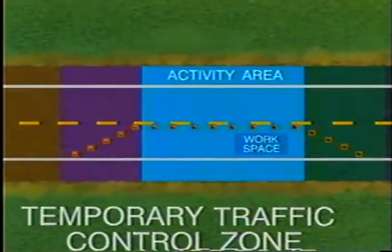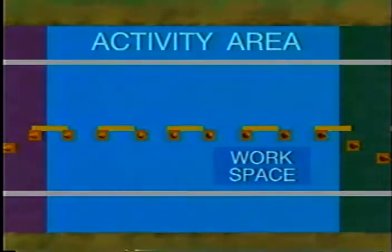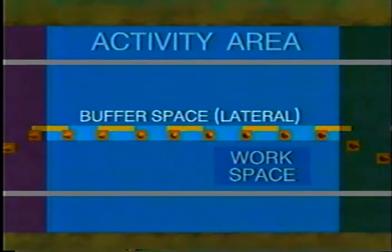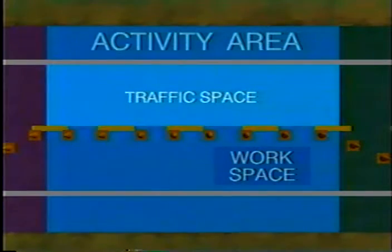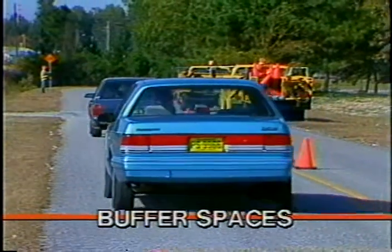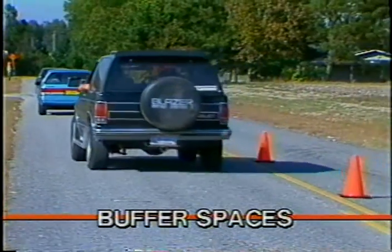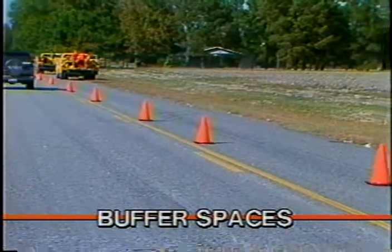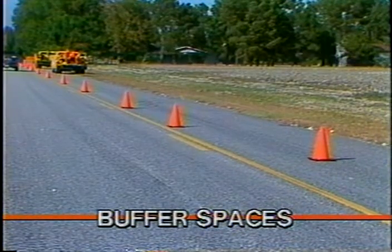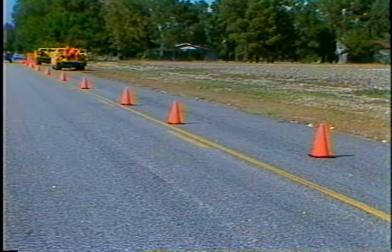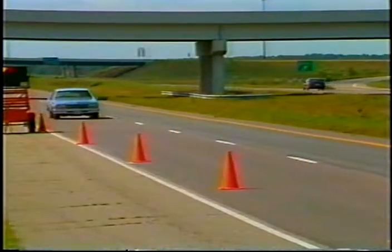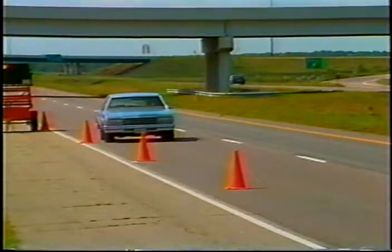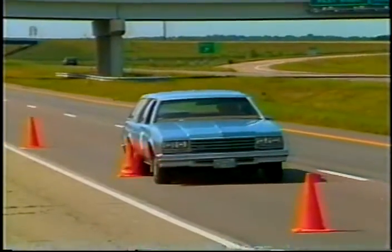The activity area consists of four distinct spaces: the longitudinal and lateral buffer spaces, the work space, and the traffic space. Buffer spaces are open and unoccupied spaces and provide a margin of safety for traffic and workers. Although they are optional, they should be provided whenever field conditions permit their use. The longitudinal buffer space is between the transition area and the work space.